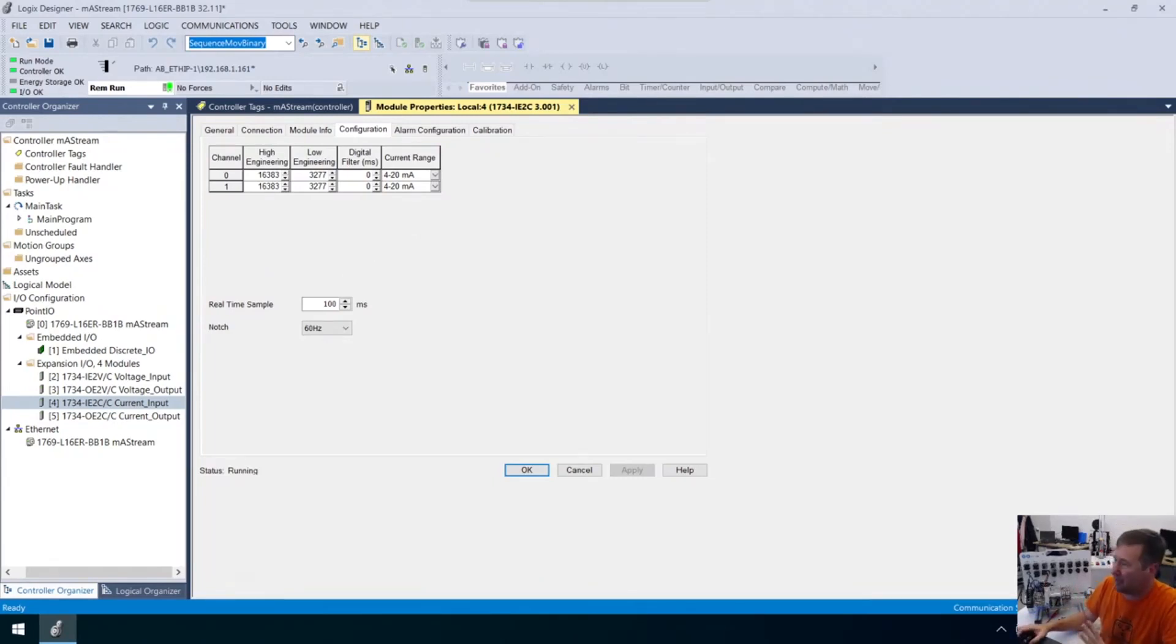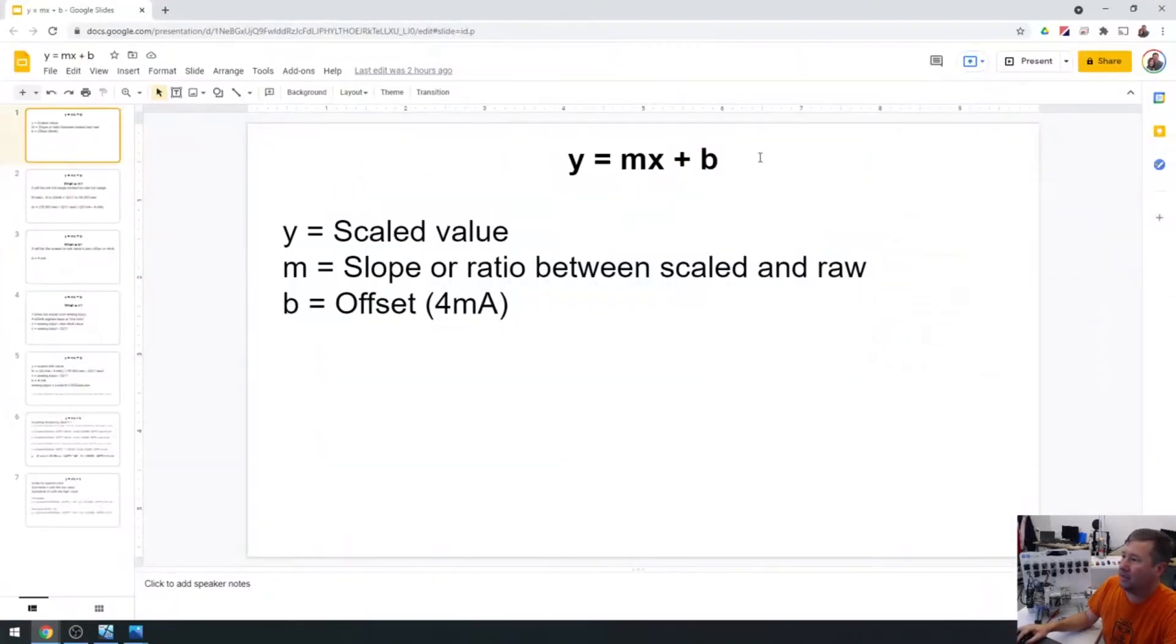Because what we're going to use is what they call Y equals MX plus B. And when I say that, everybody's heard of it. Everybody kind of remembers it. But then it's like, all right, I really don't know what it is. So if we look, here it is. Y equals MX plus B. And I'm not even going to put this in the present mode. We're just going to do this like this.